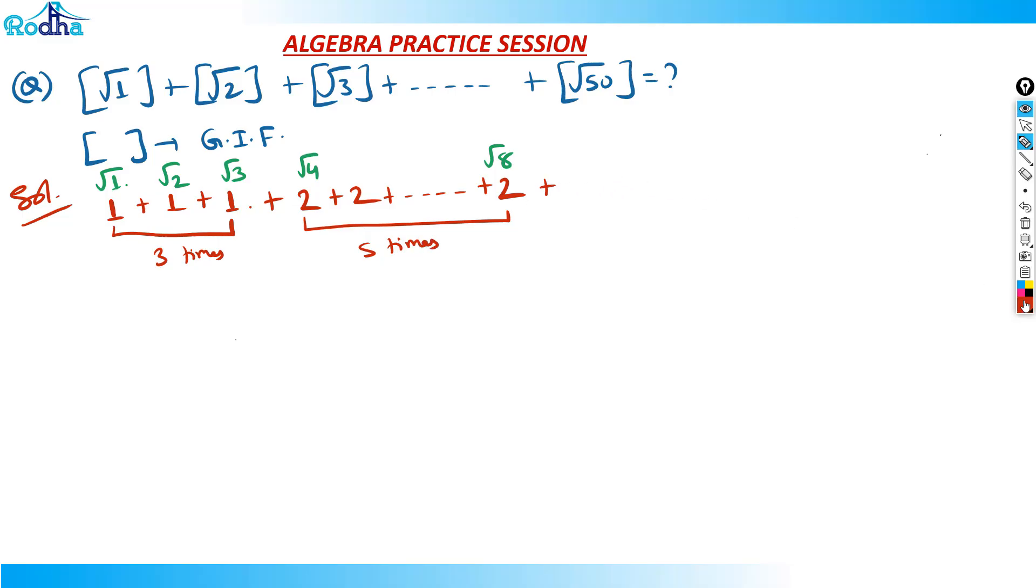Then it starts from root 9. Root 9 to root 15 - we should write root 15 here, because root 15 is 3 point something, but root 16 becomes 4. So root 9 to root 15, the value is 3. How many times will 3 occur? 9 to 15, that's 7 times. And now we got the pattern. 3 will appear 7 times. After that, 4 will appear 9 times - this is our odd number pattern: 3 times, 5 times, 7 times, 9 times. Then 5 will appear 11 times. Then 6 will appear 13 times. We have to stop at root 50 actually.